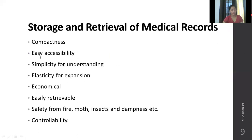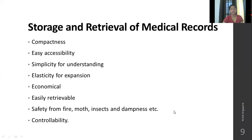Storage and retrieval of medical records: storage should be compact, not taking up too much space, and easily accessible with no mixing up. It should be simple for staff working in the department to understand the indexing sequence. There should be elasticity for expansion — room for growth in the department. It should be economical and cost-effective. Records should be easily retrievable for follow-up visits and safe from fire, insects, damp, dust, etc., to increase longevity. Controllability ensures any loss, theft, or duplication can be easily managed.